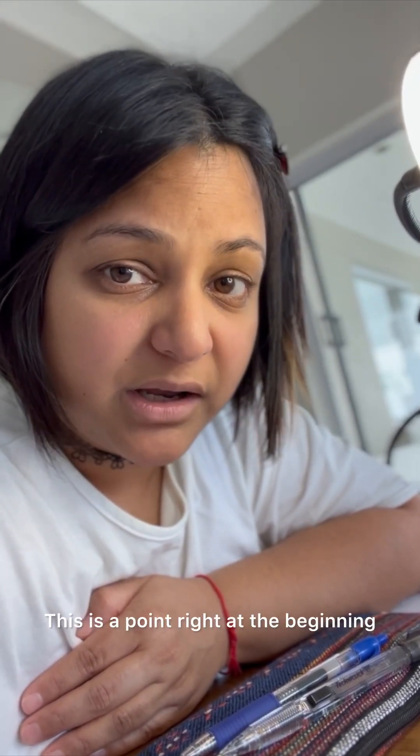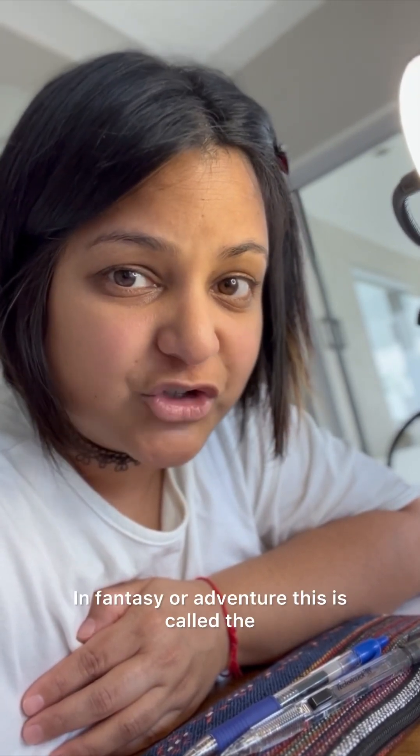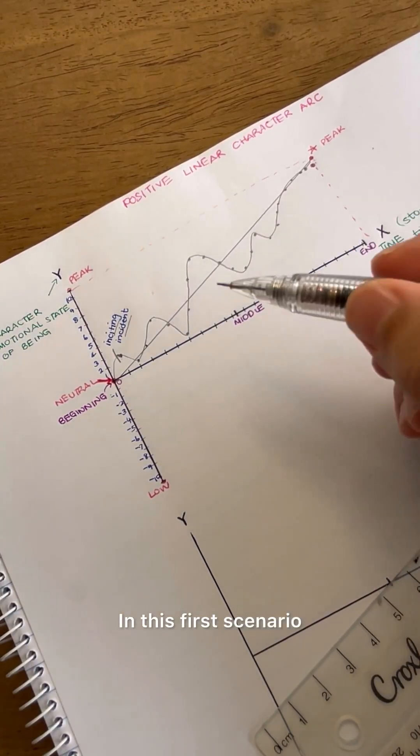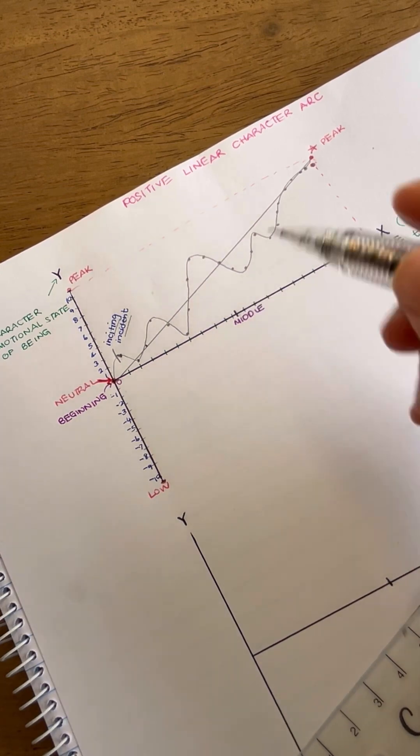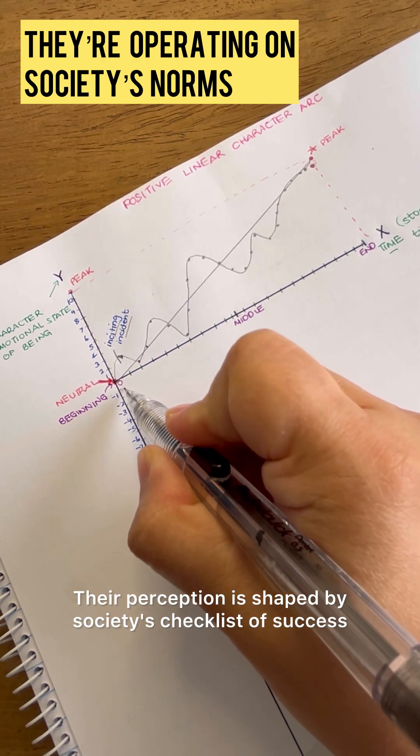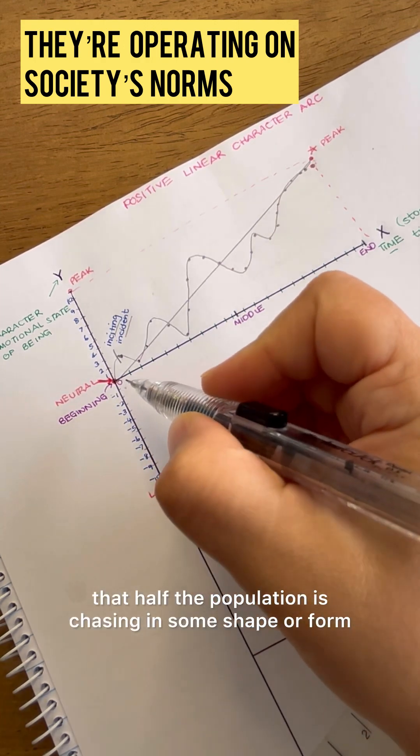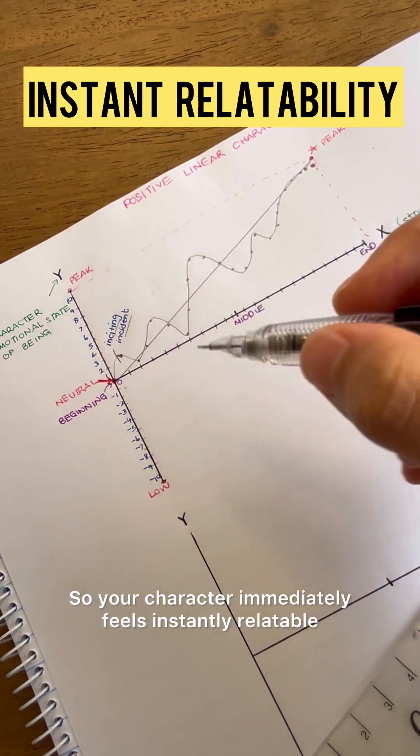This is the inciting incident. This is a point right at the beginning that changes everything for the main character. In fantasy or adventure, this is called the call-to-action moment. In this first scenario, the character is actively achieving their goals, but they're not at their full potential. Their perception is shaped by society's checklist of success that half the population is chasing in some shape or form. So your character immediately feels instantly relatable.